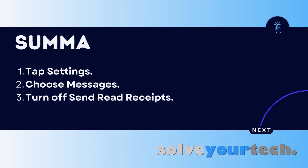To summarize, when you want to turn off read receipts on your iPhone, you can open the settings menu, scroll down and choose messages, then tap the button next to "Send Read Receipts" to turn it off.